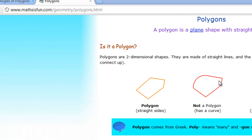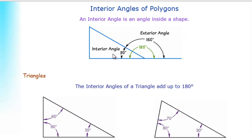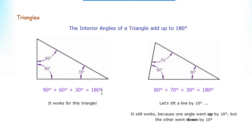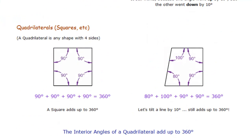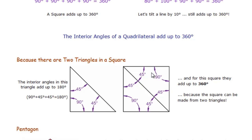Math is Fun has another page discussing interior angles of polygons. It starts with a triangle, where all interior angles sum to 180 degrees. All other polygons can be thought of as being composed of triangles. A square, for example, can be thought of as two triangles, so the sum of its interior angles is 360 degrees — 180 plus 180.